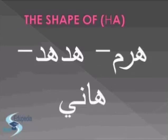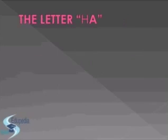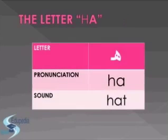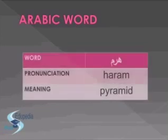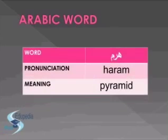For the shape of HA, look at these words and try to guess how HA looks. This is the letter HA and it sounds as 'ha' in 'hat.' We can link the HA sound to the Arabic word 'haram' — haram means a pyramid.